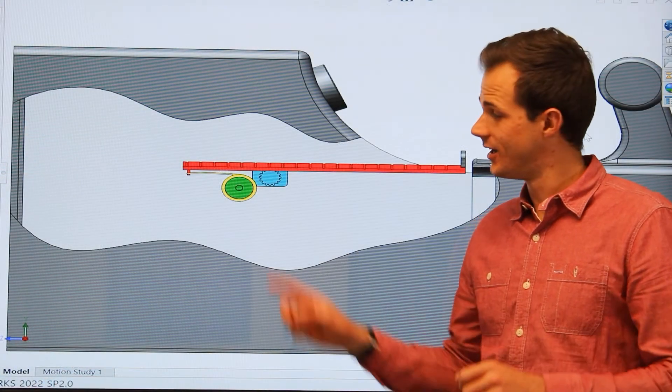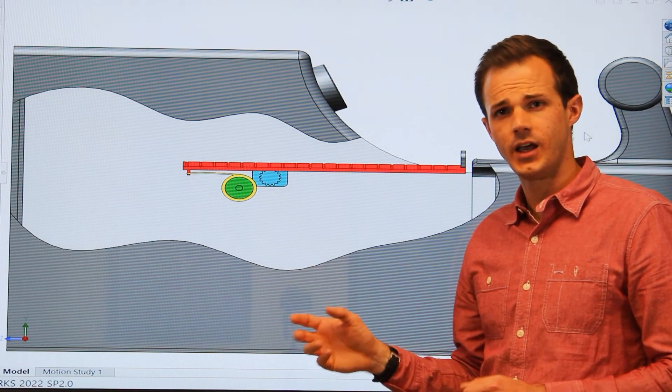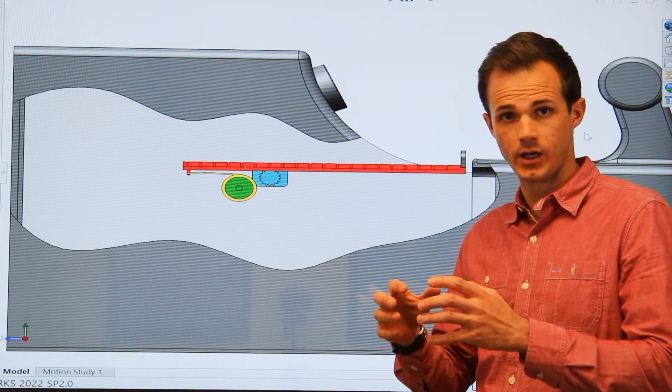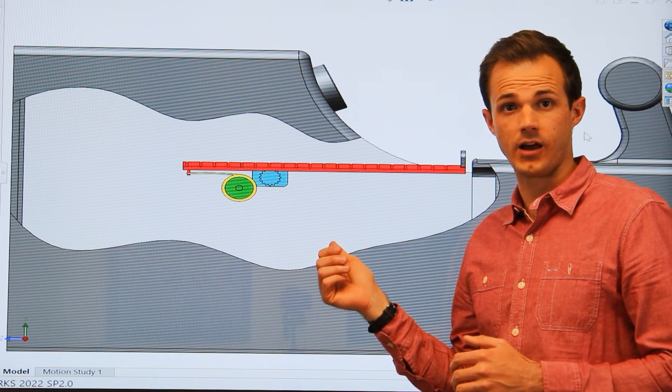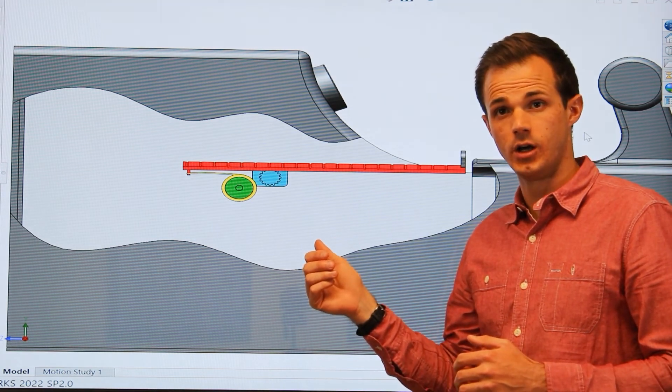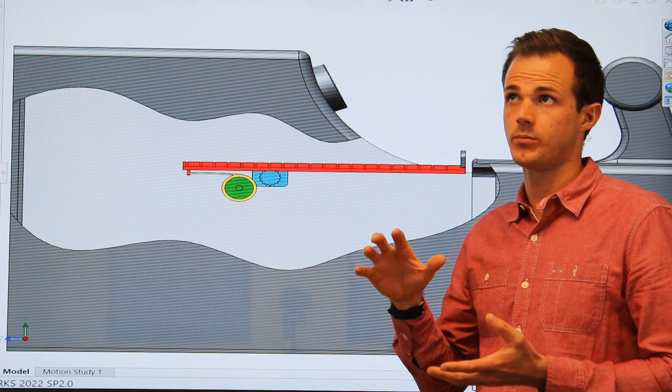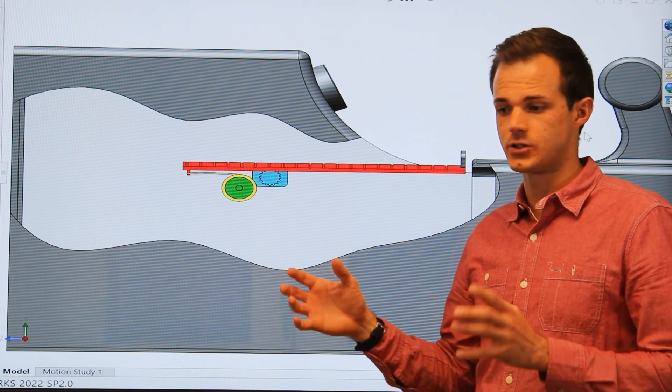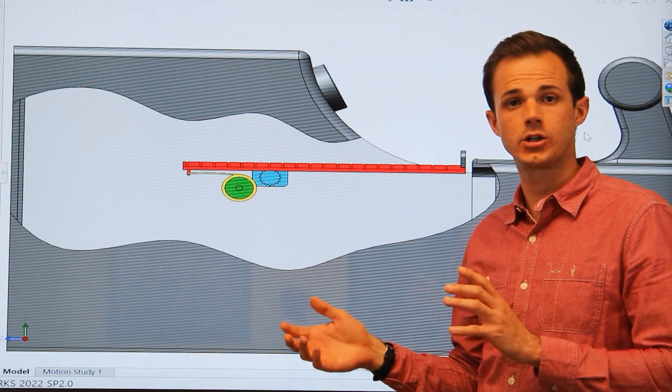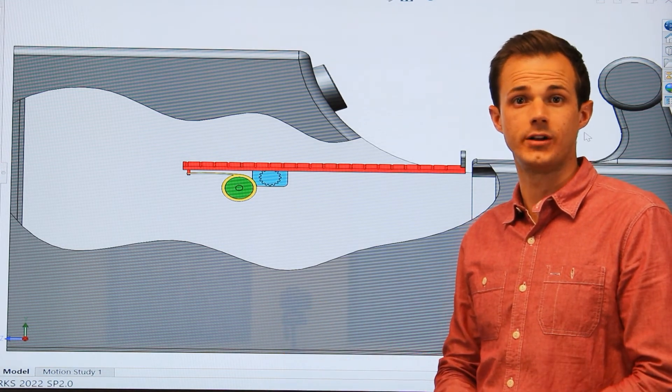Easy. This turquoise colored component is called a damper, and it contains viscous fluid that slows the mechanism down and smooths out the motion. It's almost like pulling a spoon through maple syrup, and it leads to a smoother and slower motion, almost like a soft-closed drawer in your kitchen.